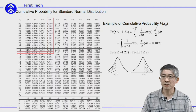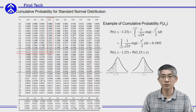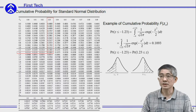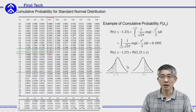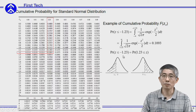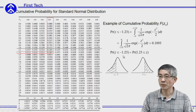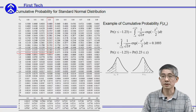Using the previous example, if you want to find the probability for z greater than 1.23, you will find the probability is the same as the probability for z smaller than minus 1.23, because of the symmetric property of the normal distribution.